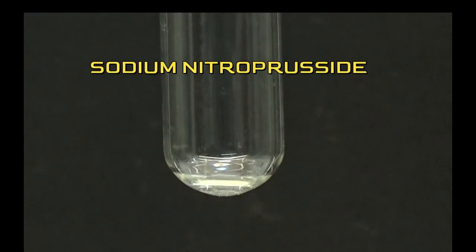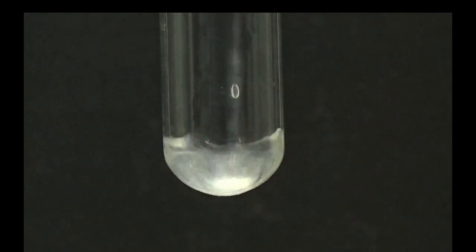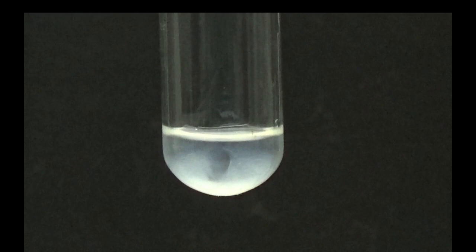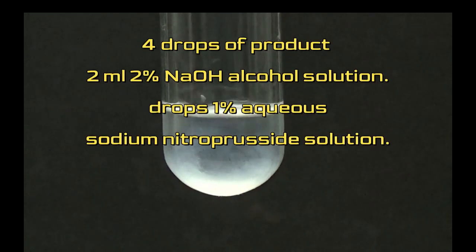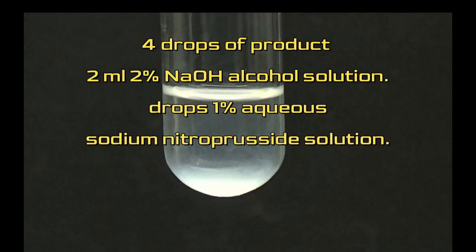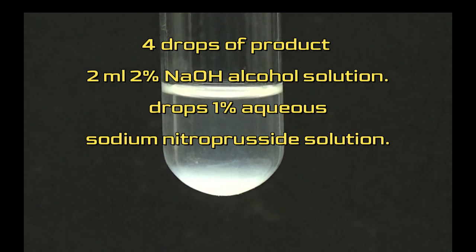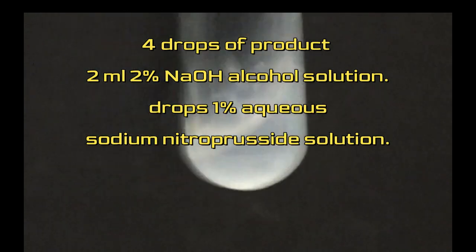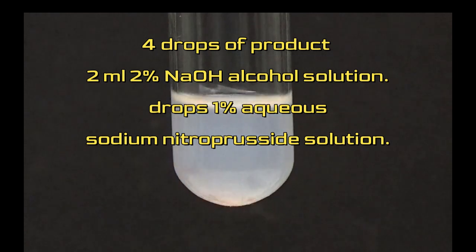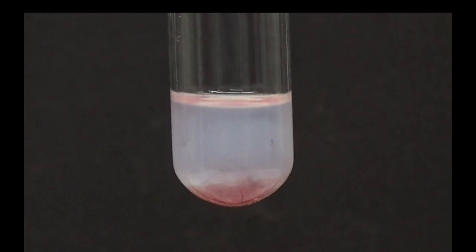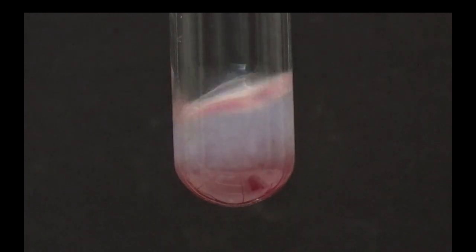The second test is sodium nitroprusside to confirm if the substance is a ketone. In a test tube, dissolve 4 drops of product in 2 milliliters of 2% sodium hydroxide alcohol solution. Add a few drops of 1% aqueous sodium nitroprusside solution. The test is positive if the color is red.